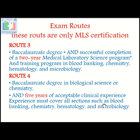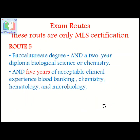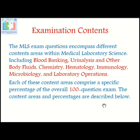For Route 3, a bachelor's degree is required along with a two-year medical laboratory sciences program and a training program. For Route 4, a bachelor's degree in biological sciences or chemistry and five years of acceptable experience are required. For Route 5, a bachelor's degree and a two-year diploma in biological sciences or chemistry, plus five years of clinical experience in blood banking, chemistry, hematology, and microbiology.